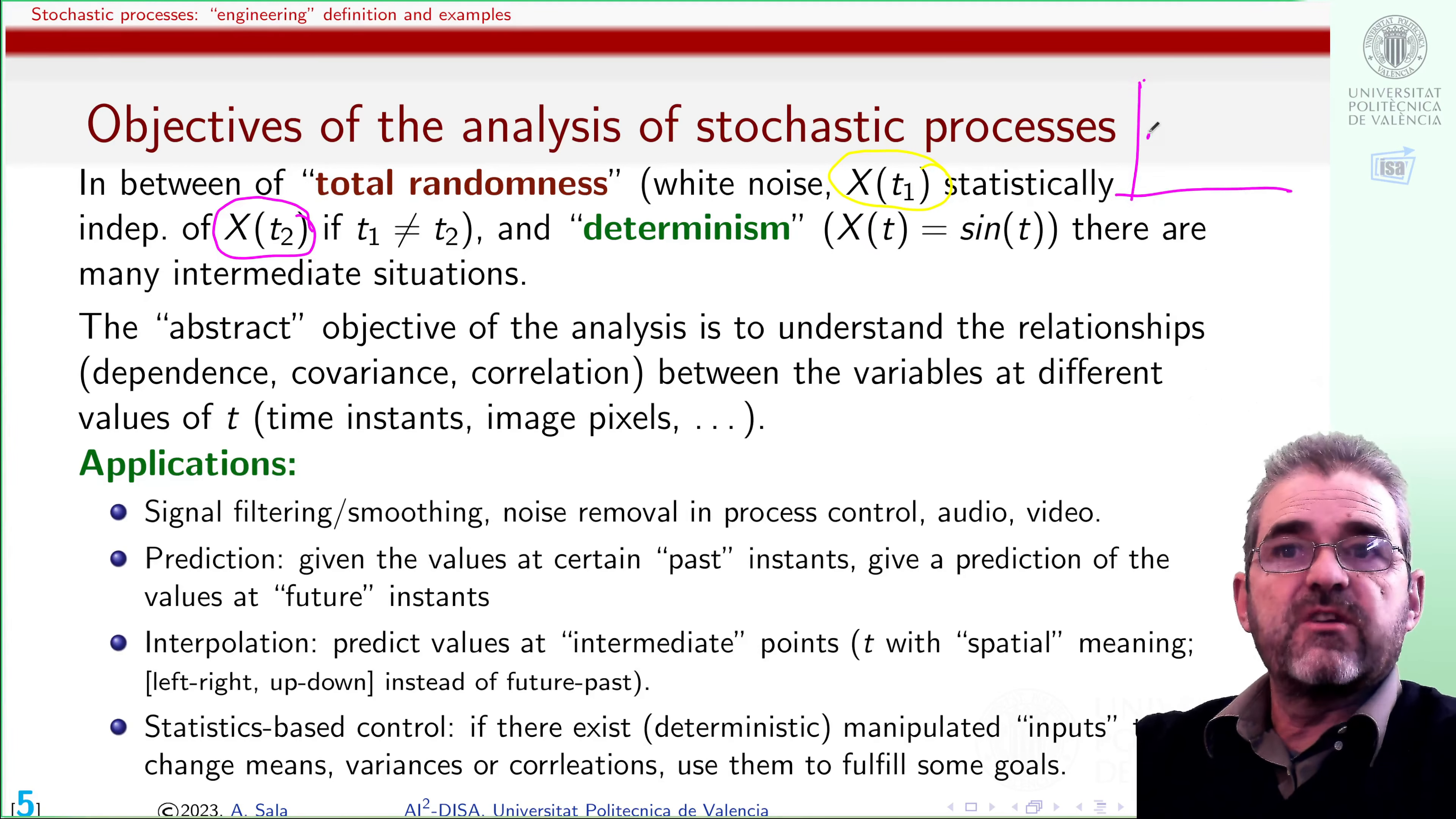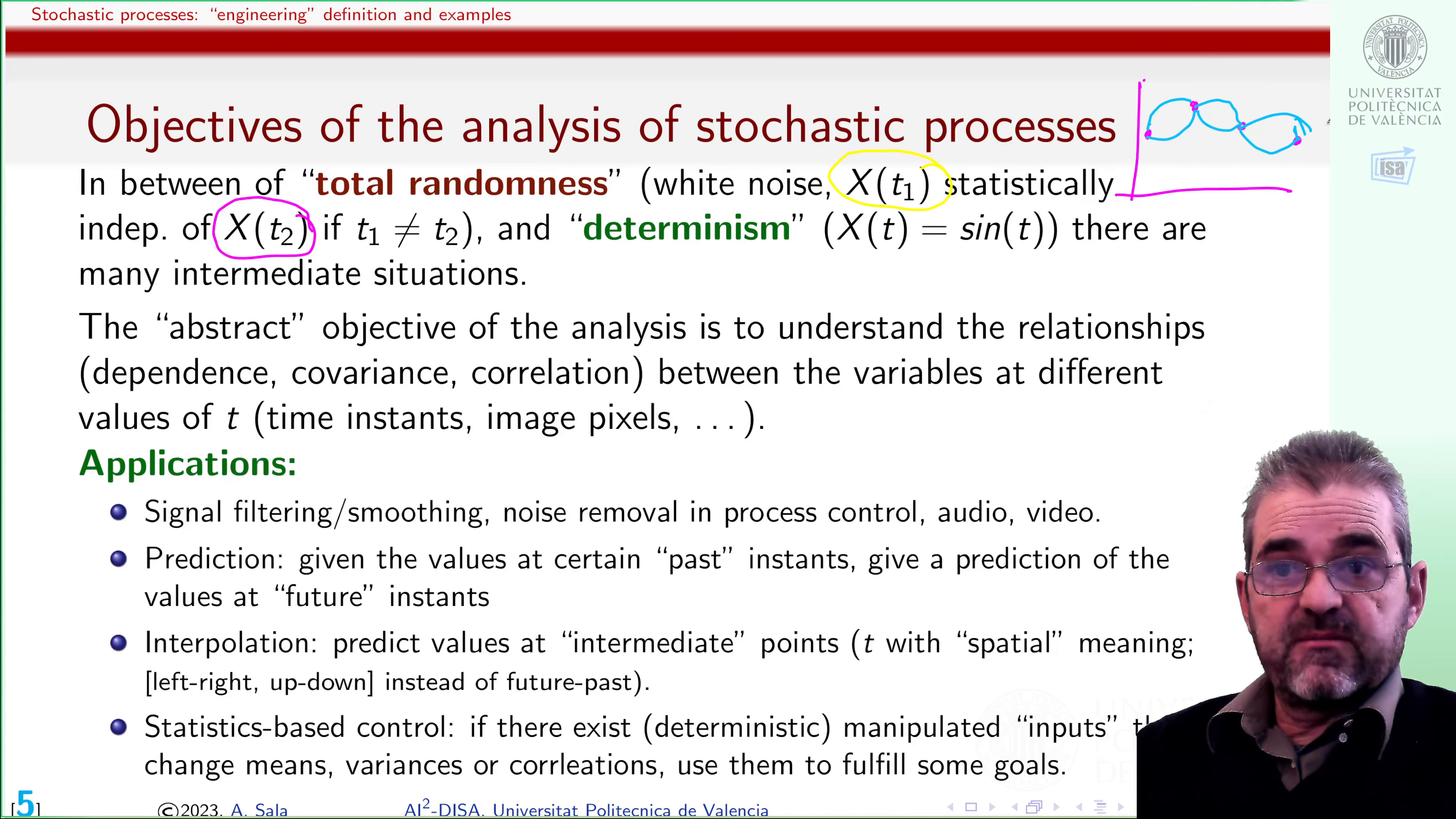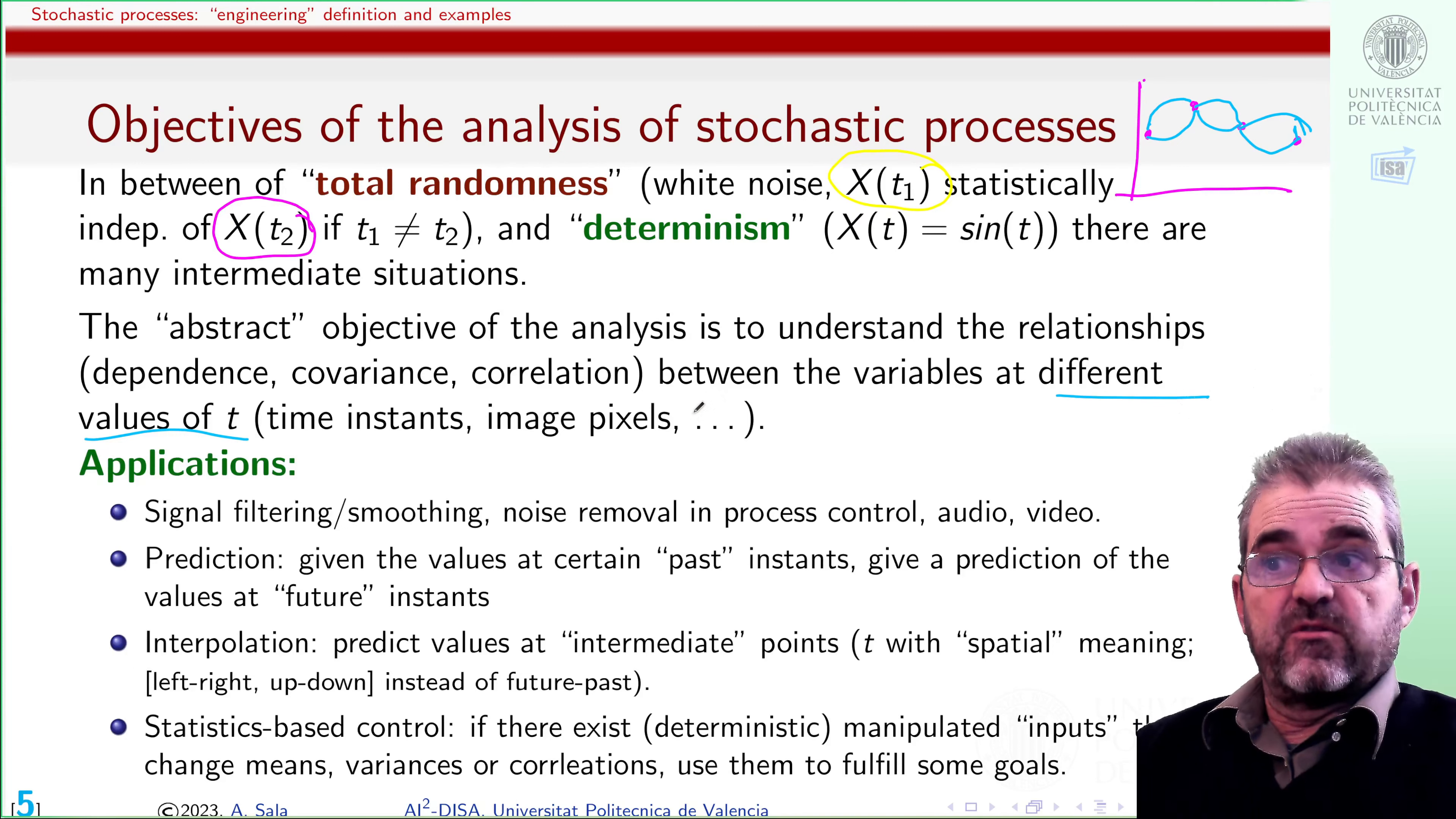I may have measurements of temperature every five hours, and I may be able to estimate that the temperature in between will be, well, I may have some confidence intervals. But if I am close to this point, and I know the temperature is smooth, then the temperature in one minute will be very close to the one here. So I can make some predictions with some confidence intervals and things like that. So the abstract objective is understanding the relationships between the variables at different values of the index variable, different times, different pixels, understanding those relationships in terms of covariance, statistical dependence or independence, and things like that.